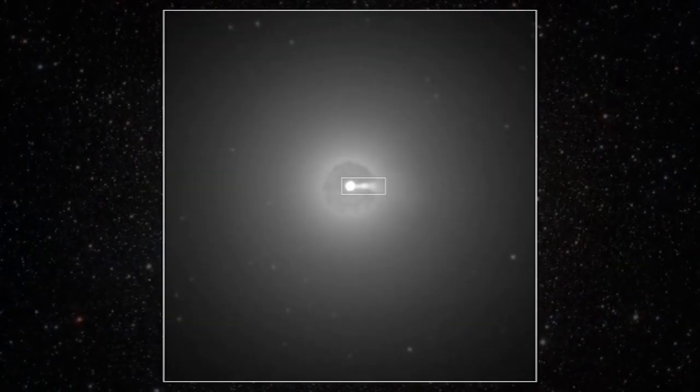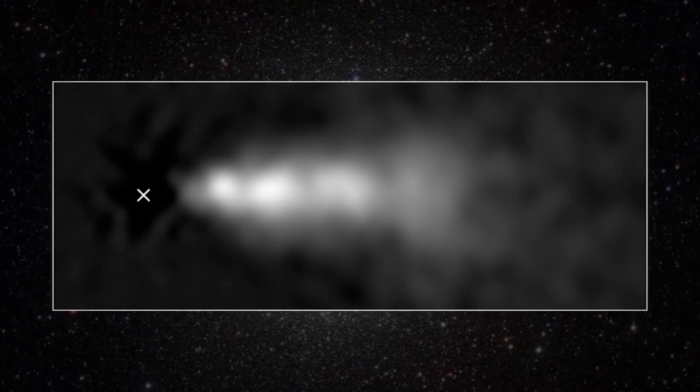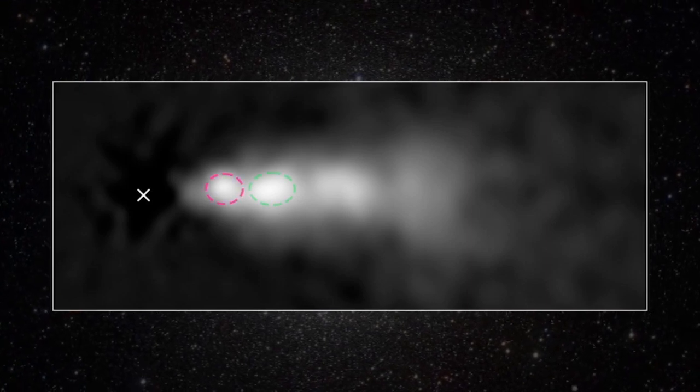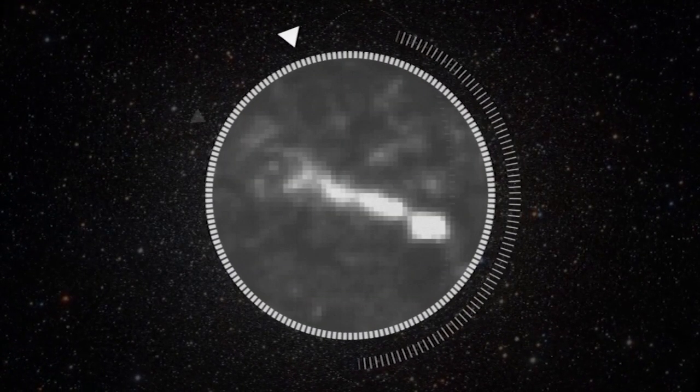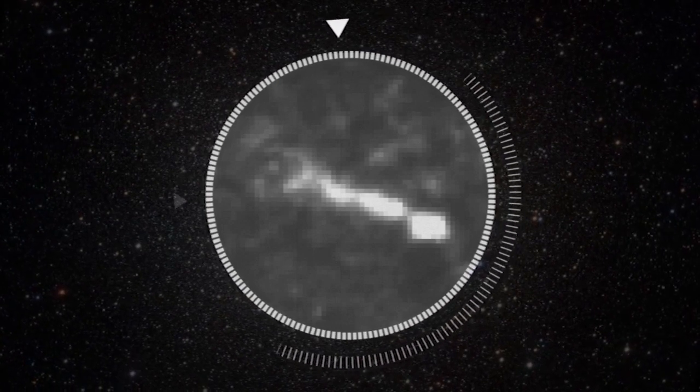This image shows such a collision. The X marks the position of the black hole in NGC 3862, and three blobs are outlined. Hubble first observed the galaxy in 1992, when the jet was first discovered.